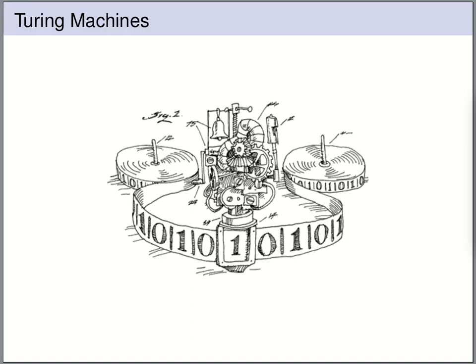Roughly speaking, you can think of a Turing machine like this: you have some machine that has attached to it a tape, and this machine can read and write the cells on this tape.